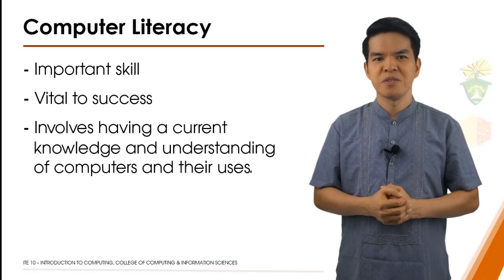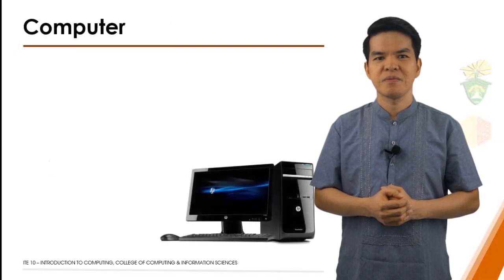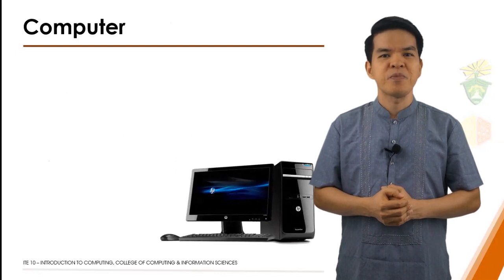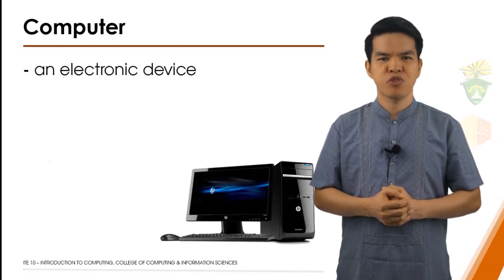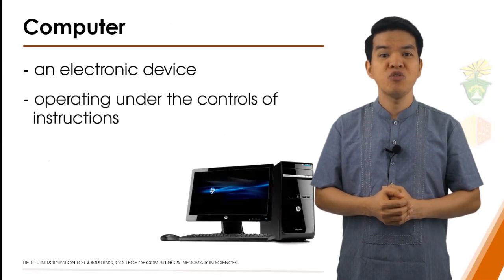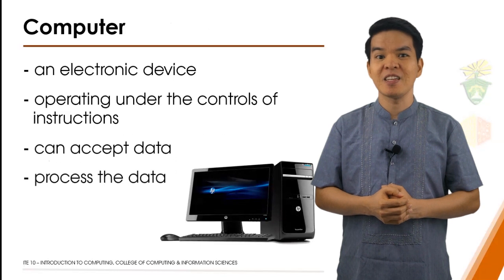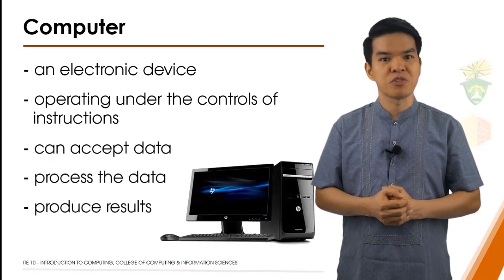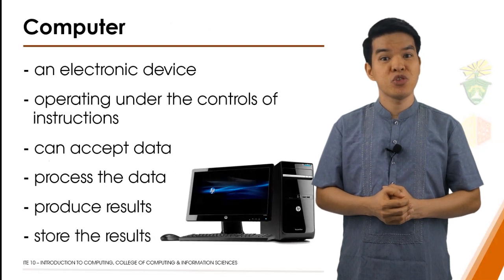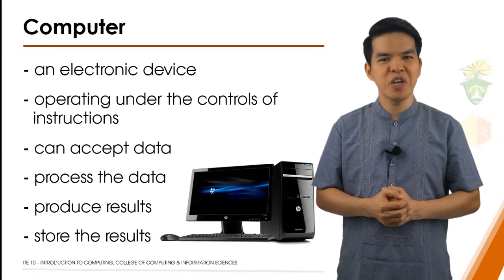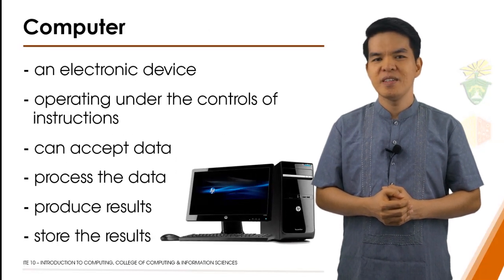Do you have any idea what a computer is? A computer is an electronic device operating under the control of instructions stored in its own memory that can accept data, process the data according to specified rules, produce results, and store the results for future use. But how does a computer process data into information — and are data and information the same thing?